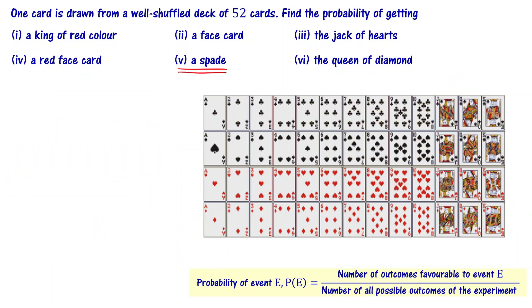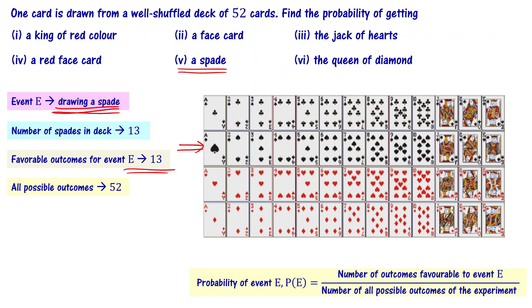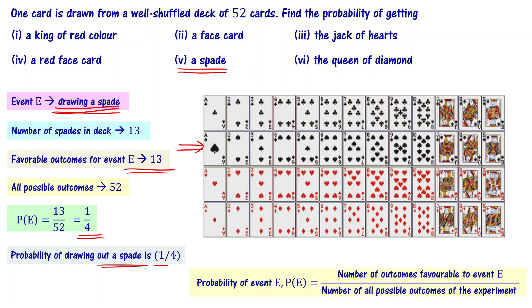Now let's look at what is the probability of getting a spade. Event E is drawing a spade. Each row has 13 cards, so total spade cards in the deck are 13. Any one of those 13 spade cards being selected gives a favorable outcome. Number of favorable outcomes is 13, and all possible outcomes are 52. The probability is 13 divided by 52, that is 1 by 4. If you take 4 cards, there is a chance that 1 card will be a spade. The probability of getting a spade is 1 by 4.